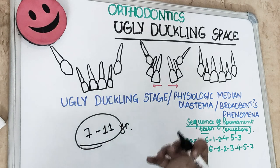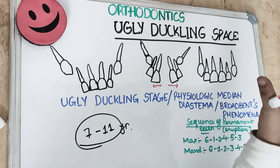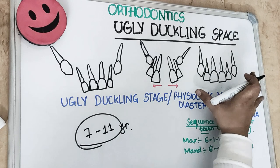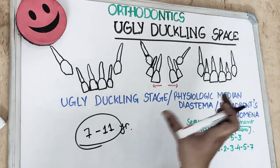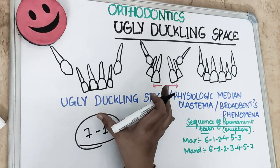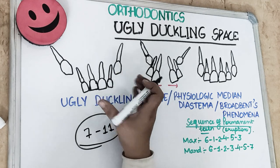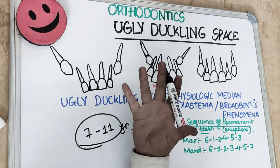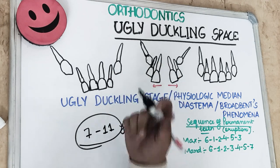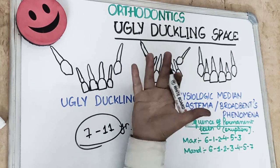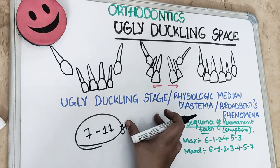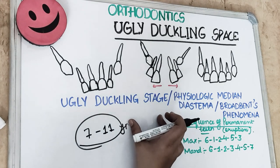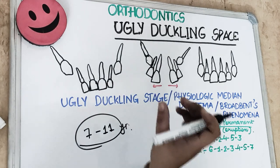It corrects when the permanent teeth erupt in the oral cavity. This phase automatically corrects — the malocclusion is automatically corrected. So it is also known as self-correcting malocclusion or transient malocclusion.